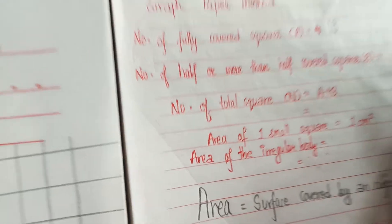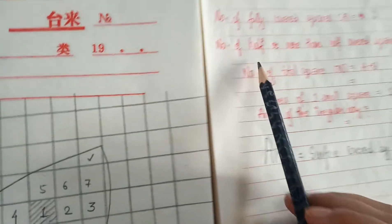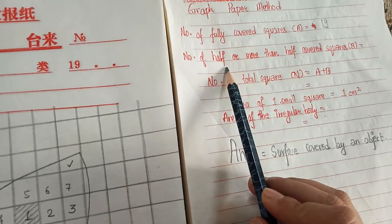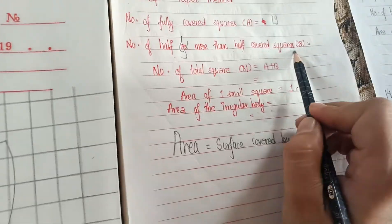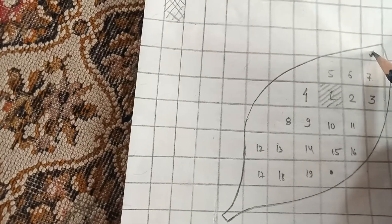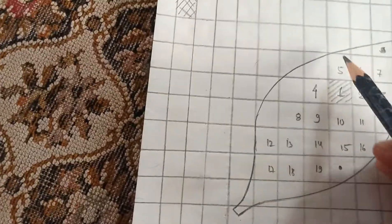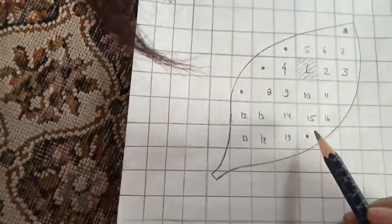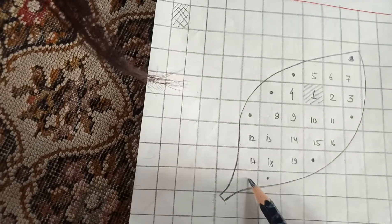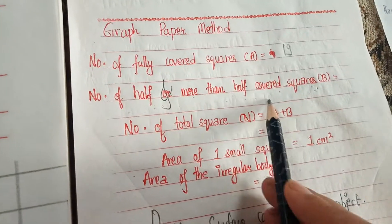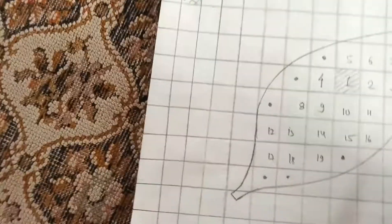Now let us move to half and more than half covered squares. We suppose that as B. Let us count: 1, 2, 3, 4, 5, 6, 7, 8. The number of half and more than half covered squares is 8.